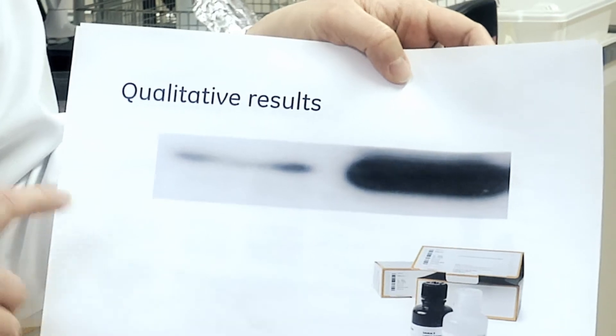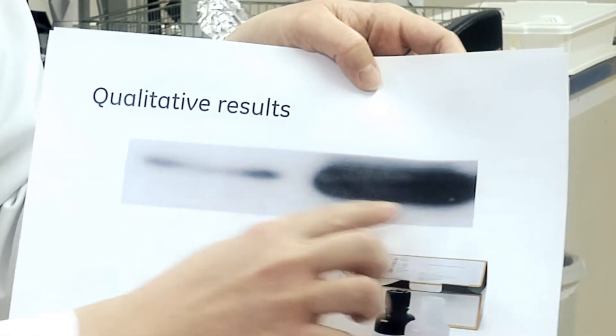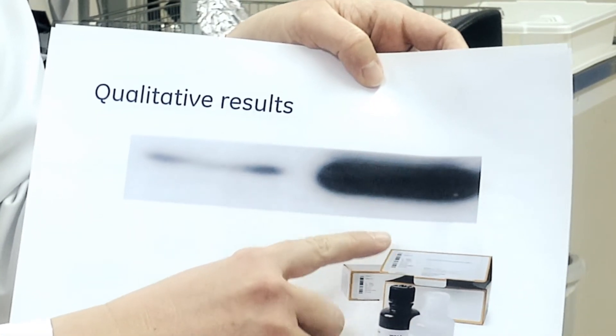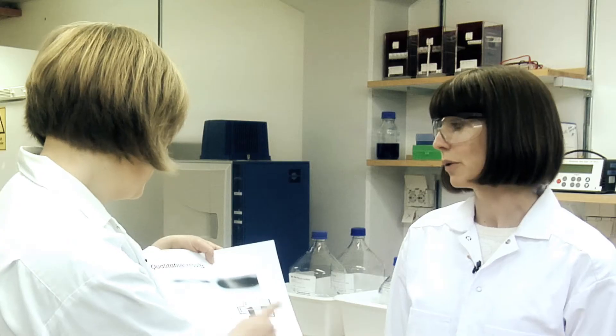I have two examples. So first I have this qualitative Western blotting application and I have two clones here in this results, and one is overexpressed. I just want to see that it's here and verify that it's in my sample. Looks good — it's overexpressed.